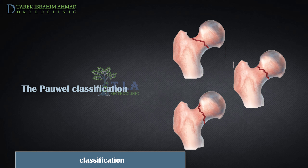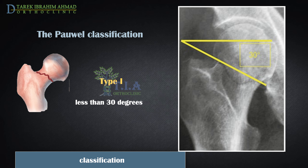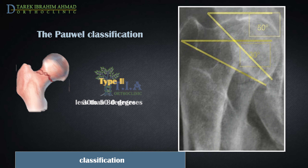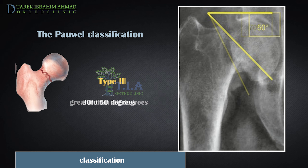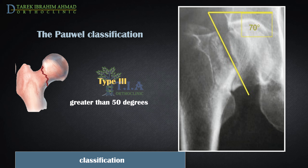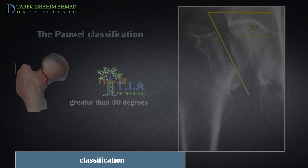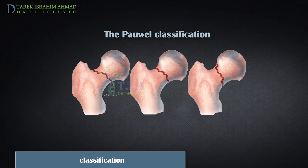The Pauwels classification also includes the inclination angle of the fracture line relative to the horizontal: Type 1 is less than 30 degrees, Type 2 is 30 to 50 degrees, and Type 3 is greater than 50 degrees. Higher angles and more vertical fractures exhibit greater instability and have a higher risk of osteonecrosis postoperatively.